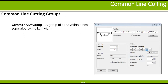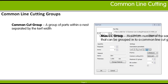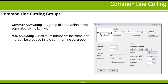A Common Cut Group is a group of parts in a nest that are all separated from each other by the kerf width. The Common Cutting method you choose controls the form of Common Cut Groups that the nester creates. If you allow some parts to use the unrestricted method, Common Cut Groups can potentially contain any combination of those parts. If you specify the same part method, Common Cut Groups will be created that consist of that kind of part only.